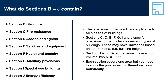Sections in Volume 1 are organised in different ways — there are two main variants. Some sections list all the relevant performance requirements first, then all the verification methods, then all the DTS provisions including specifications where relevant. Other sections are divided into parts which cover a particular topic, and each part then contains the applicable performance requirements, verification methods and DTS provisions.